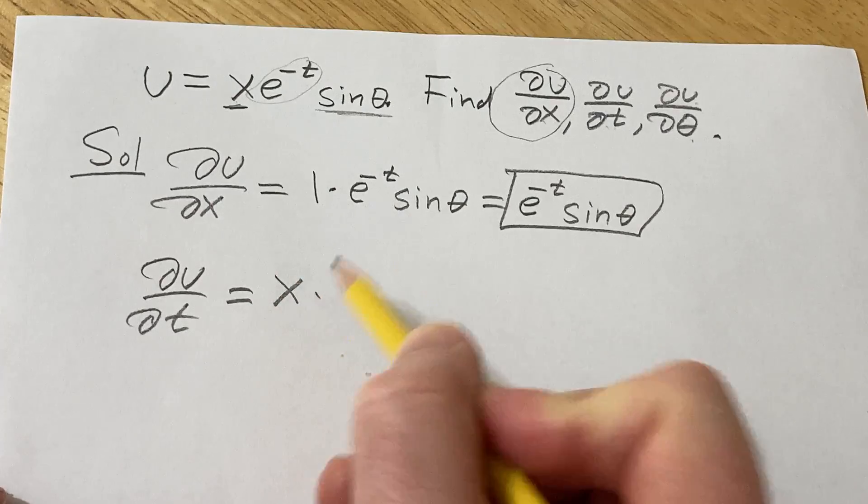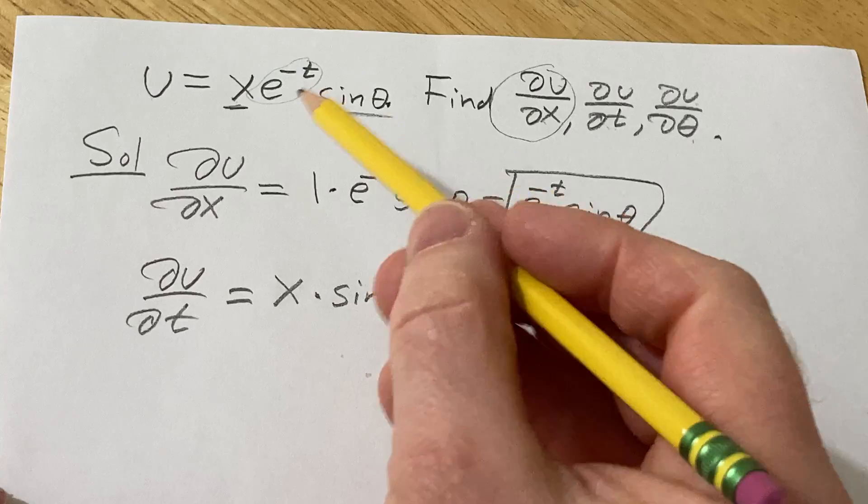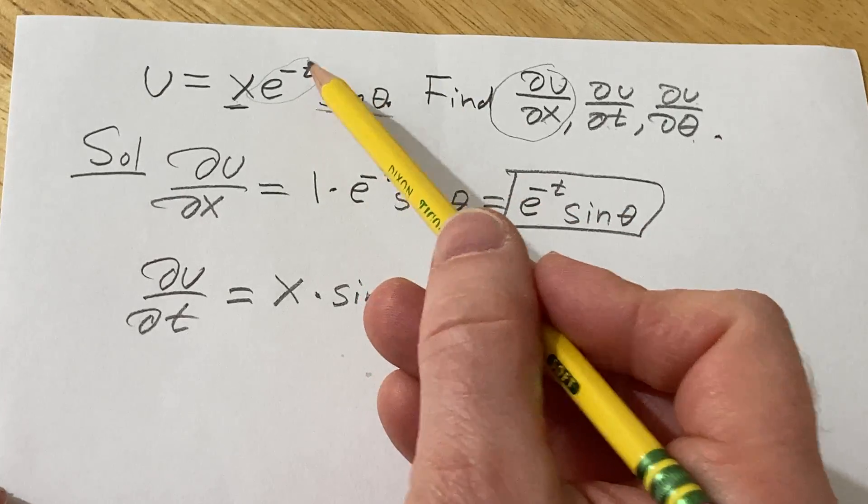So the x hangs out. The sine theta hangs out as well, so I'll put it here. Just rearranging it, putting it in the front. And then the derivative of e^x is e^x.